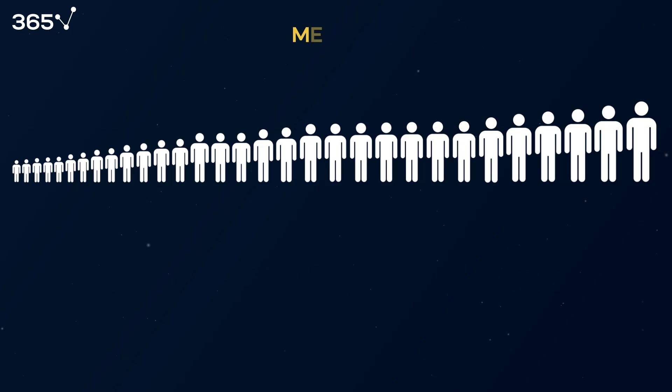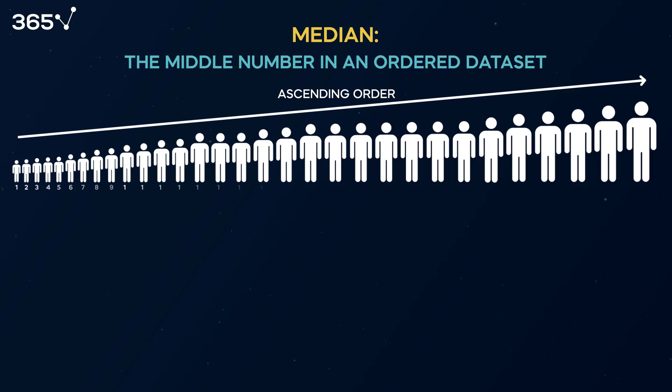Then we have the median, the middle number in an ordered dataset. So, here we have 31 heights in ascending order. So, the 16th number, 172, is the median, the middle value.